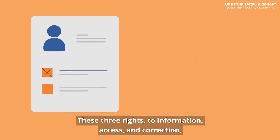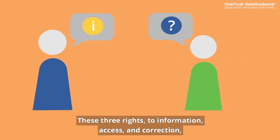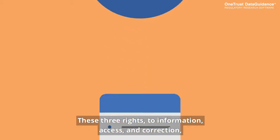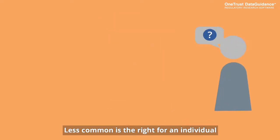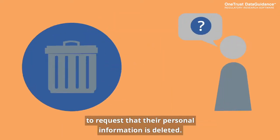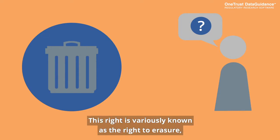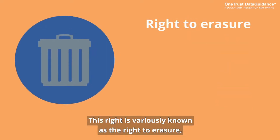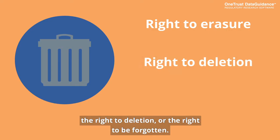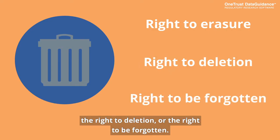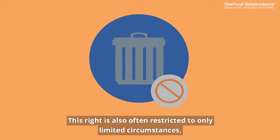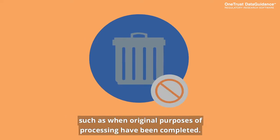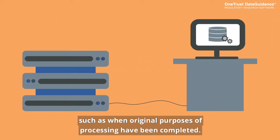These three rights — to information, access, and correction — appear in some form in most privacy frameworks. Less common is the right for an individual to request that their personal information is deleted. This right is variously known as the right to erasure, the right to deletion, or the right to be forgotten, and is often restricted to only limited circumstances, such as when the original purposes of processing have been completed.